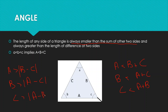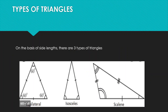So in a triangle, the length of the third side is always smaller than the sum of the other two sides and always greater than the difference of the two sides. Also, if angles satisfy a < b < c, it implies that the corresponding side lengths also satisfy length of a < length of b < length of c.